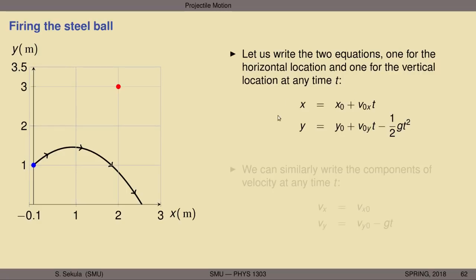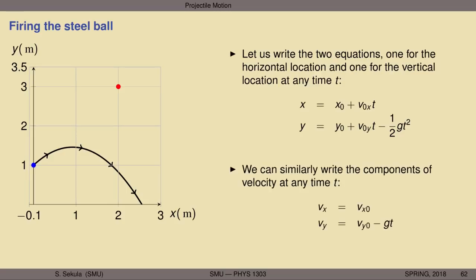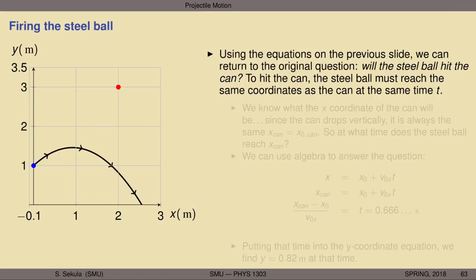These are the equations that tell us position in space given velocity and acceleration. We can similarly write the components of the velocity at any time t: the horizontal component is constant throughout because no acceleration acts on it (neglecting air resistance), while the vertical component's magnitude changes with time and at some point reverses direction and points downward. Using these equations on the previous slide, we can return to the original question that motivated all this mathematical and physical activity: will the steel ball strike the can?